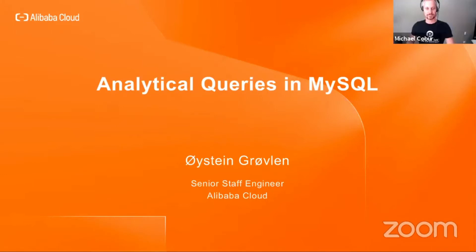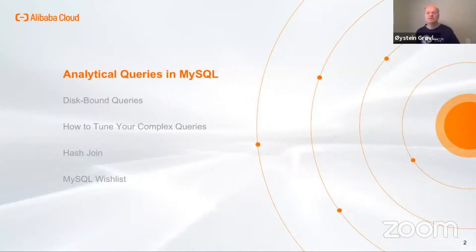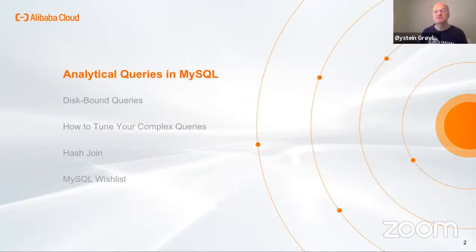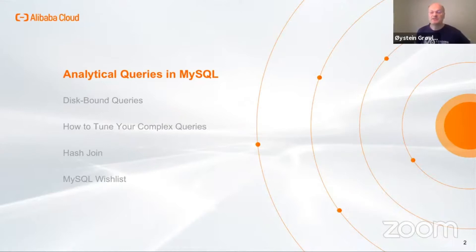My name is Eusten Gravland and I work on Alibaba's PolarDB, which is based on MySQL. I used to work in the MySQL optimizer team for 10 years. My talk today is about analytical queries in MySQL. I will present some results from comparing MySQL with MariaDB and Postgres, discuss some special issues with disk-bound queries, show some ways you can improve the execution of complex queries in MySQL, and also discuss hash join, which is a recent feature of MySQL. I will conclude with a discussion on how MySQL could be improved to support analytical queries.